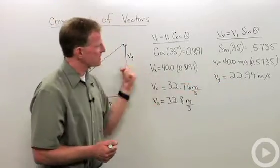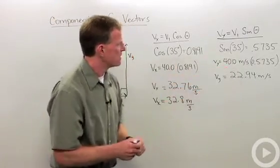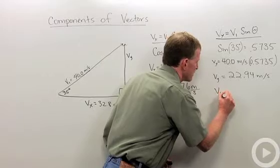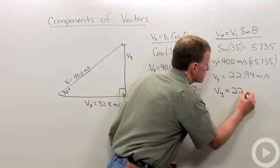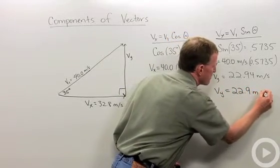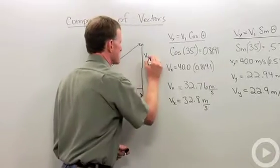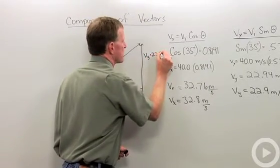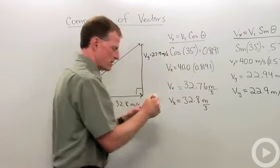And again, knowing that I have three significant figures in my initial value, let's calculate vy to 22.9 meters per second. And this equals 22.9 meters per second.